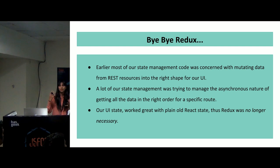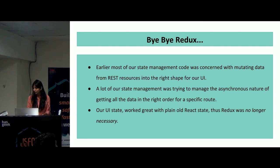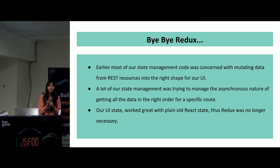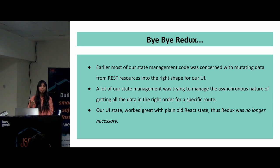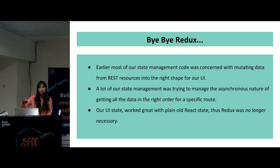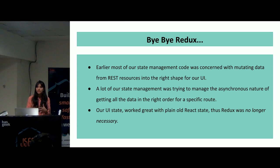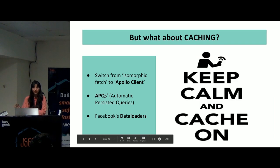So till now we talked about GraphQL at the server side. Now we move to the frontend. Earlier we were using Redux for our state management, but with GraphQL this was no longer required. Most of our Redux state management code was about manipulating data received from the REST APIs. But since we were now getting exactly the data we required, the UI was not supposed to deal with data manipulation. Redux was no longer required. Also the asynchronous handling of sequential API calls was no longer required — it was all handled by GraphQL. We reduced a large chunk of code from our codebase.